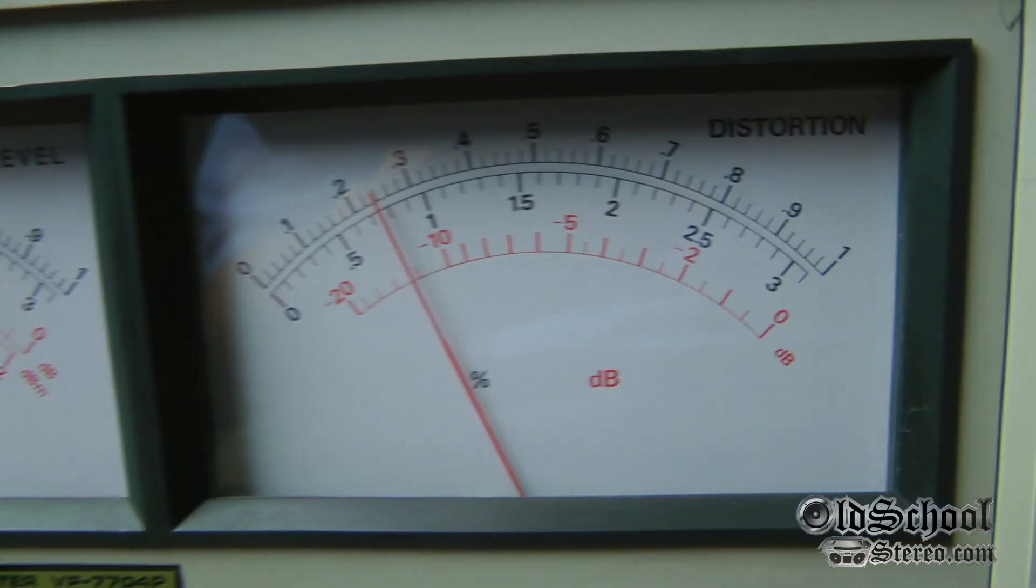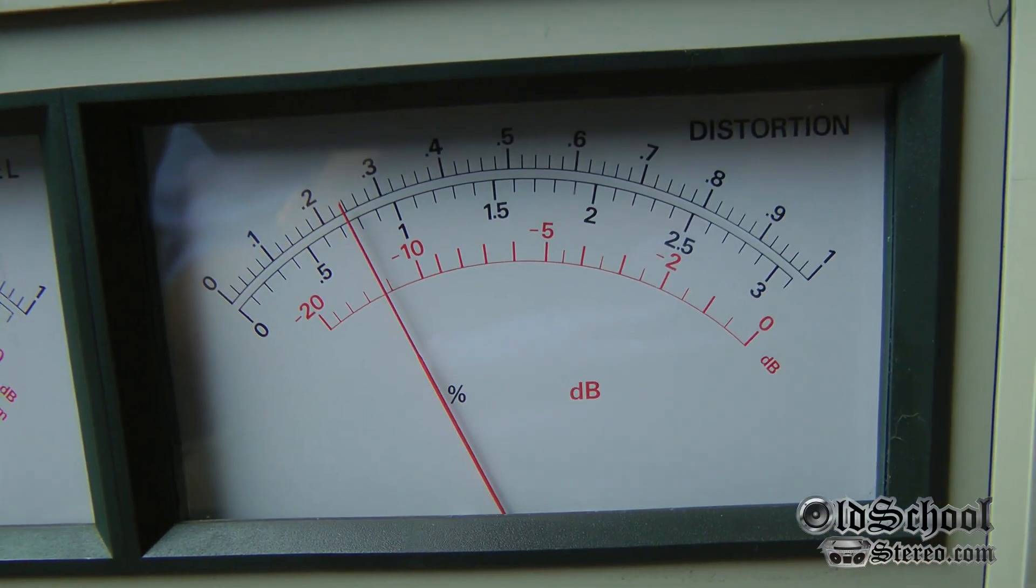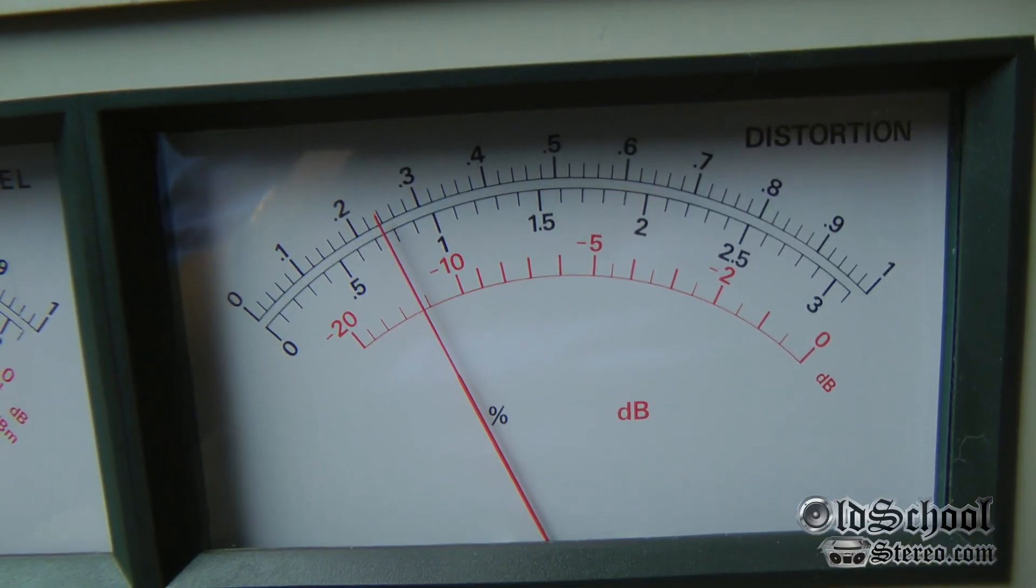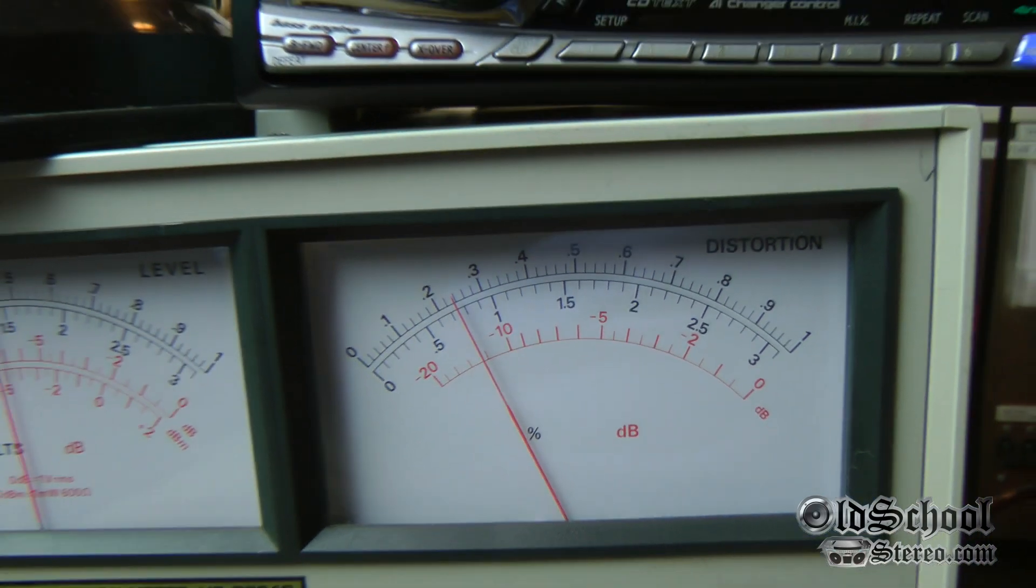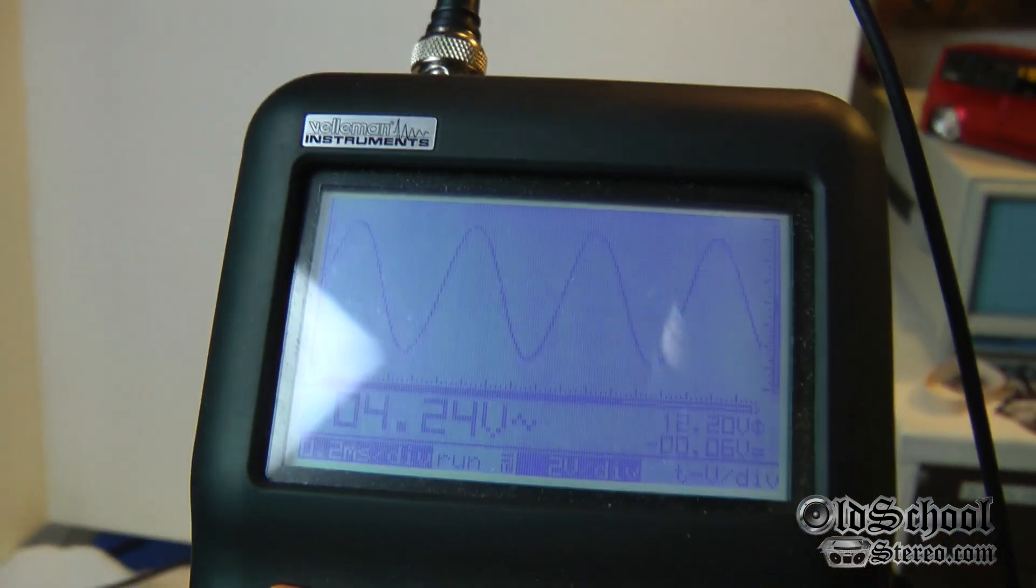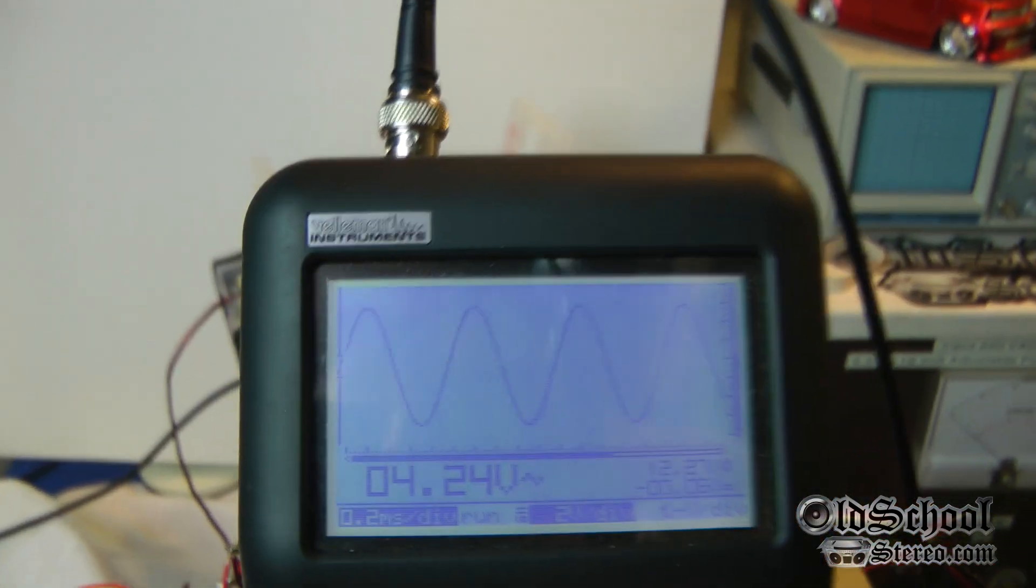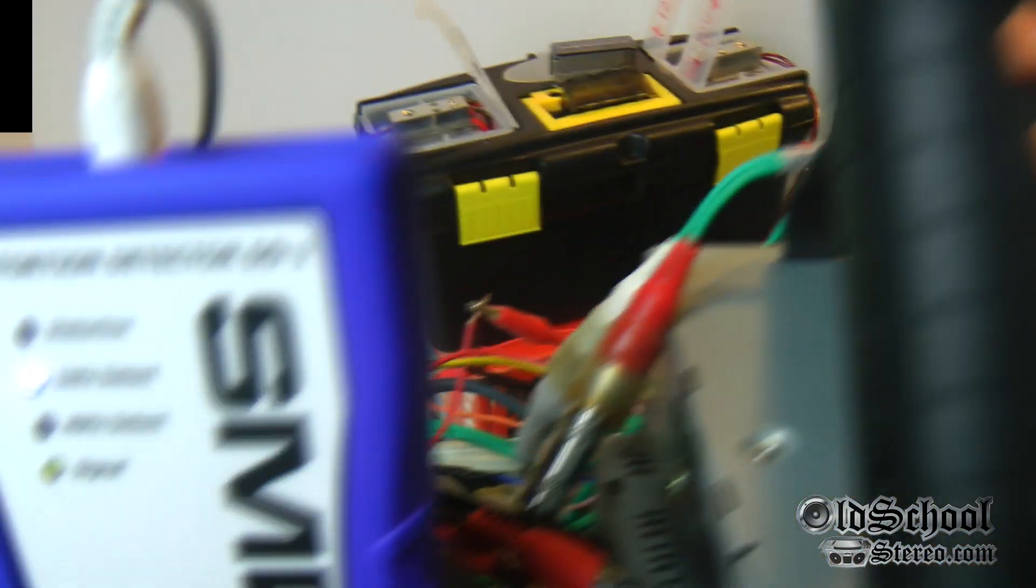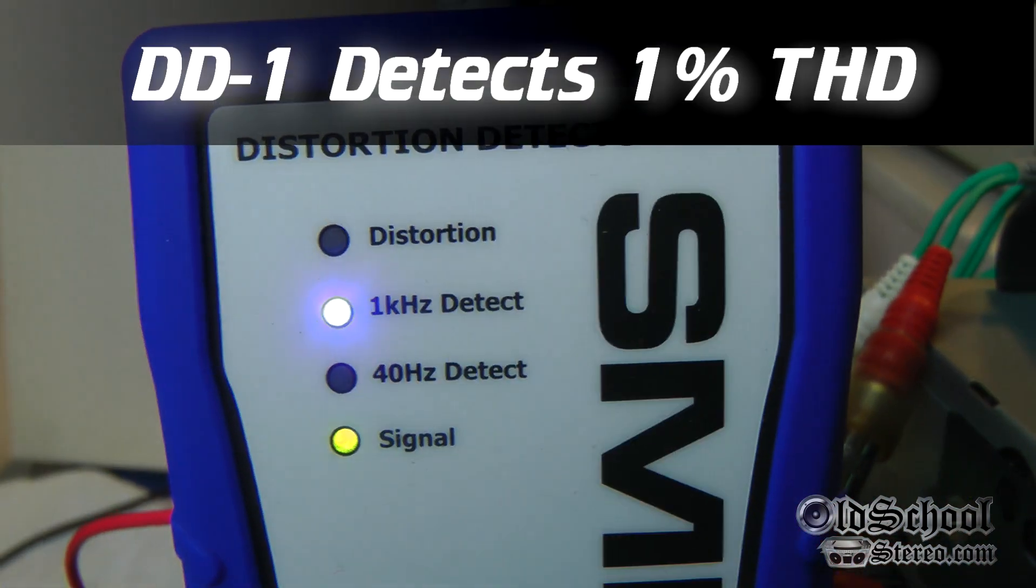And check out the distortion. This is even better than the other unit. That is between 0.02 and 0.03 percent THD at full output. And here's the o-scope which shows us the output is 4.24 volts RMS, very clean signal there as you can see.